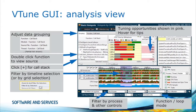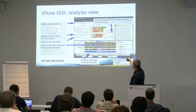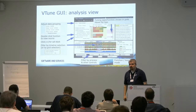Red means there's a potential performance problem. So if one of those cells is highlighted with a red color — this red kind of color — it will tell you that in this hotspot, there is a performance problem with regard to that metric, like in this case overhead and spin time.